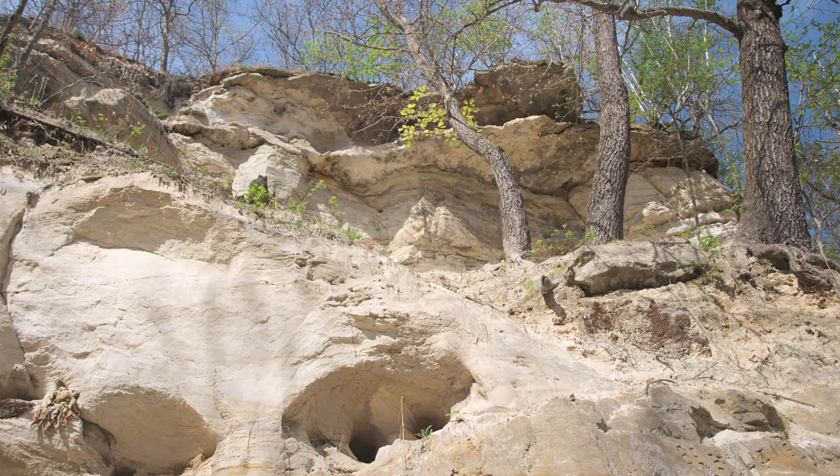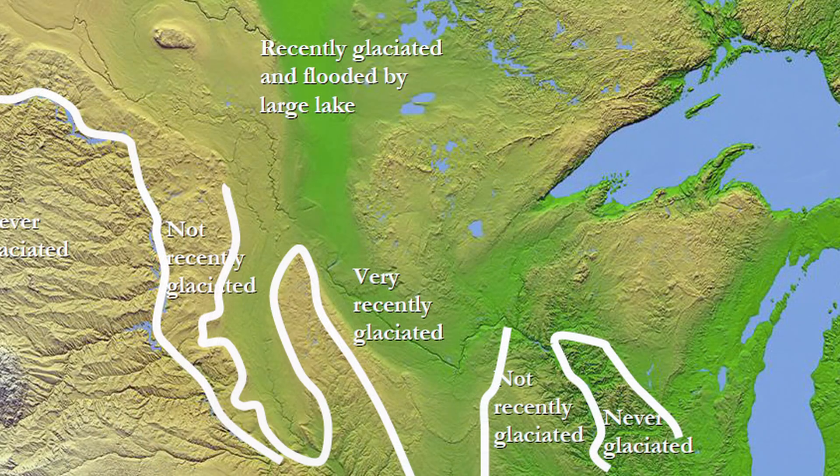Older geology also affects what these rivers are like. What we're standing in right now is a bedrock trench — we have limestone and sandstone exposed on this valley wall — so it controls maybe where the waterfalls are and where the valley walls are steep. I think geology is kind of the most important factor, the backdrop for understanding all our rivers.